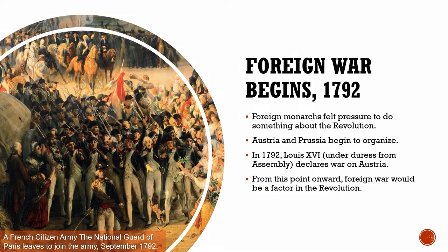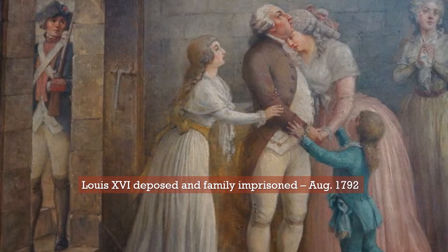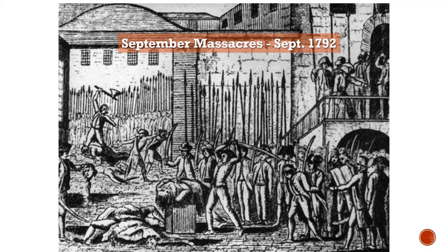By the summer of 1792, three years after the revolution had begun, France was now at war with Austria and Prussia and society was under incredible stress. On August 10th, an armed mob stormed the palace of Tuileries and placed the king under arrest; his family was imprisoned and he was marched to a prison where he would spend the remainder of his days. By September, the National Assembly had declared itself a republic and officially stripped the king of all his power. We also see in September an incredible wave of violence, mostly by the sans-culottes — nobles were imprisoned, some executed, and some in prisons were killed without trial. This became known as the September Massacres.